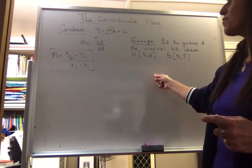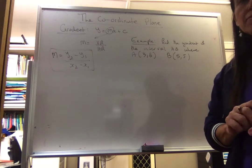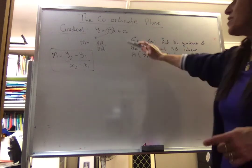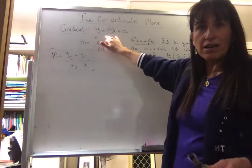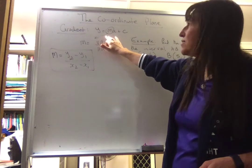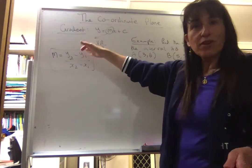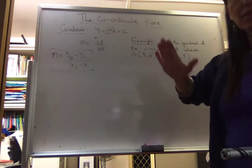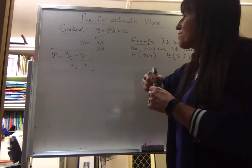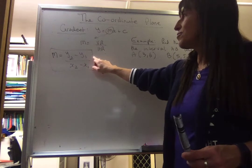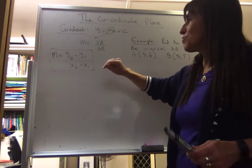We're moving on to finding the gradient of a line using the formula. Before we get to it, remember we have the equation of a straight line: y equals mx plus c, where m is the gradient. Gradient means the slope of a line — this is looking at the vertical rise over a horizontal run. From here, we get this equation: m equals y₂ minus y₁ over x₂ minus x₁.